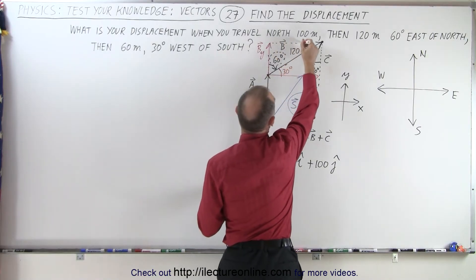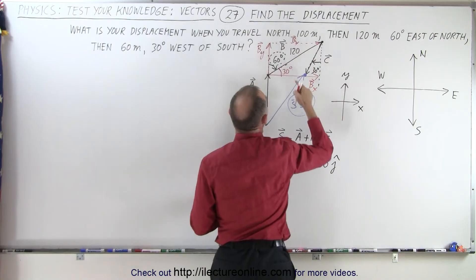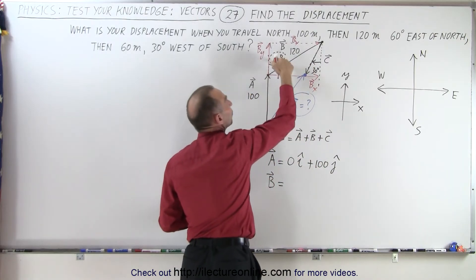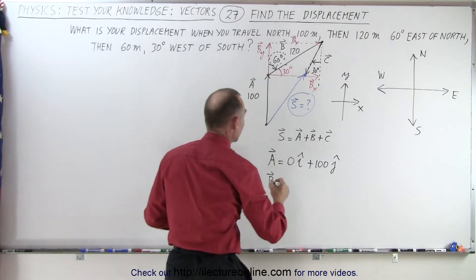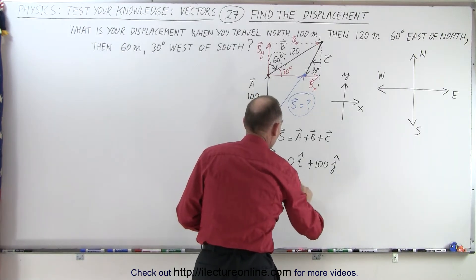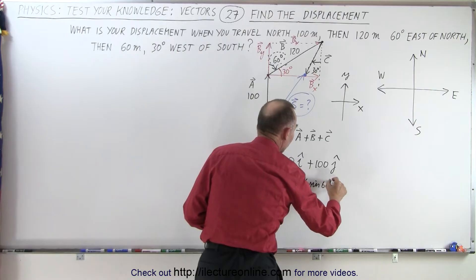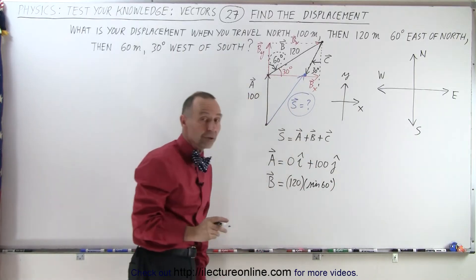Notice that the B sub X component is really opposite to that angle. In essence, this here is the B sub X component, which is opposite to the angle of 60 degrees. So if we're going to find the X component, this would be equal to 120 times the sine of 60 degrees, or the cosine of 30 degrees,